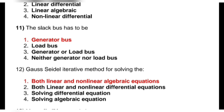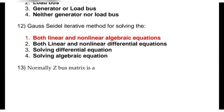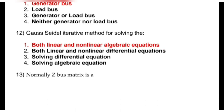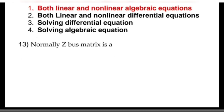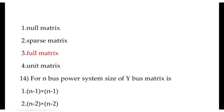Next question is: Gauss-Seidel iterative method is used for solving — options are both linear and non-linear algebraic equations, both linear and non-linear differential equations, solving differential equations, or solving algebraic equations. The correct answer is both linear and non-linear algebraic equations. Next question: normally the Z bus matrix is — options are null matrix, sparse matrix, full matrix, or unit matrix. The correct answer is full matrix. In Z bus matrix, all elements are non-zero, so more memory is required.